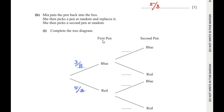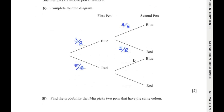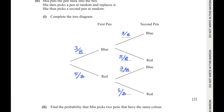She picks a pen at random and then replaces it, which means when she picks up this pen she is going to replace it before the second pick. So the total number of pens remains the same because she has replaced the pens. The probability of getting a blue pen again becomes 3 over 8 — it has not changed. And the probability of getting a red pen will also not change. The same thing repeats: for the blue pen it is 3 over 8, and for the red pen it is 5 over 8, since there has been a replacement.